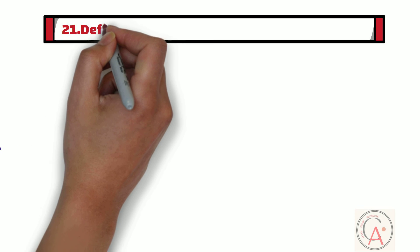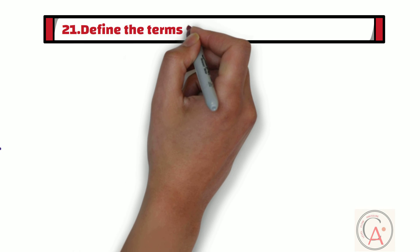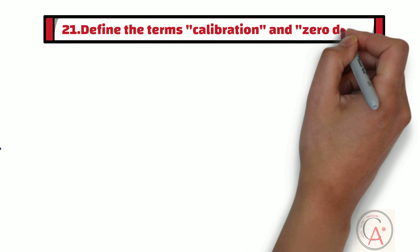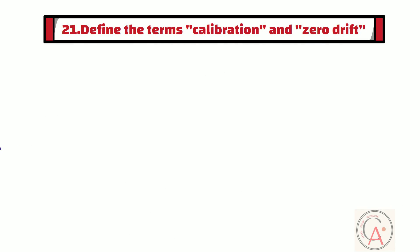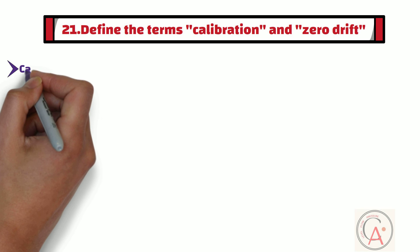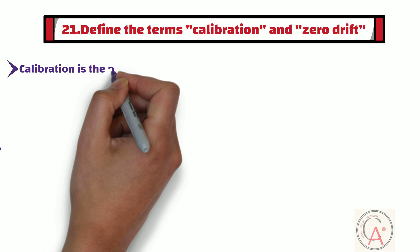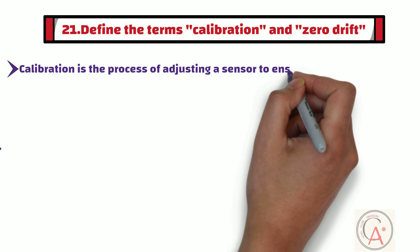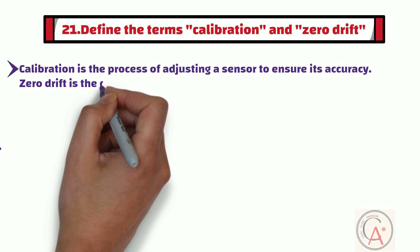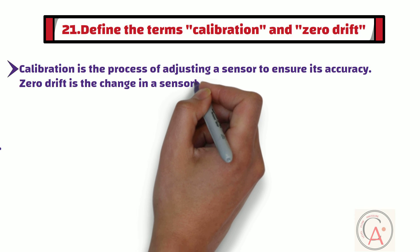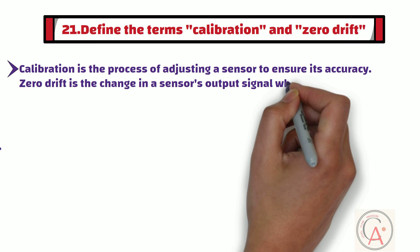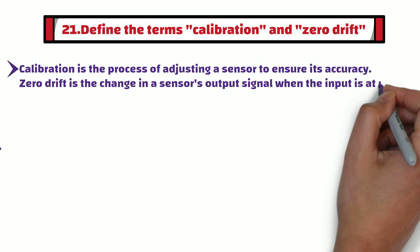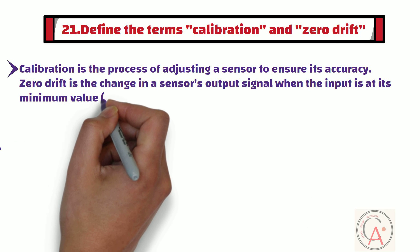The 21st question is: define the terms calibration and zero drift in the context of sensors. Calibration is the process of adjusting a sensor to ensure its accuracy. Zero drift is the change in a sensor's output signal when the input is at its minimum value or zero.